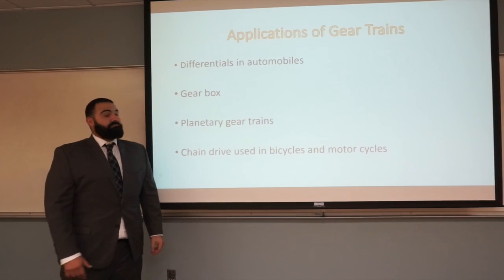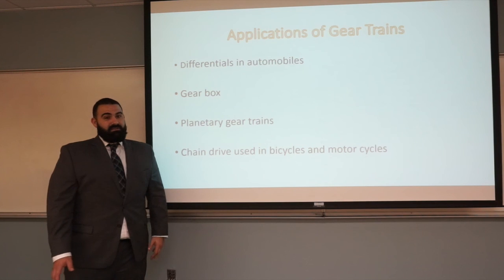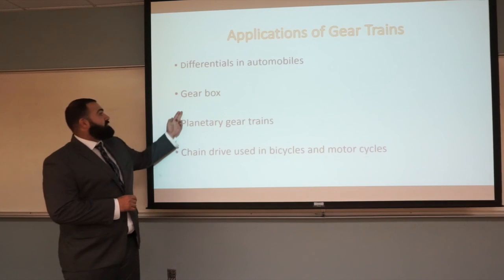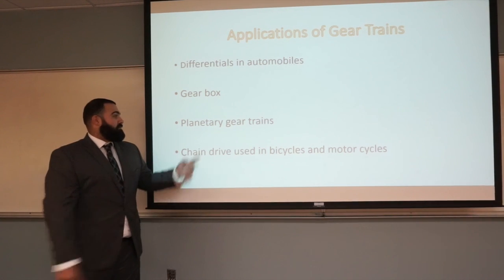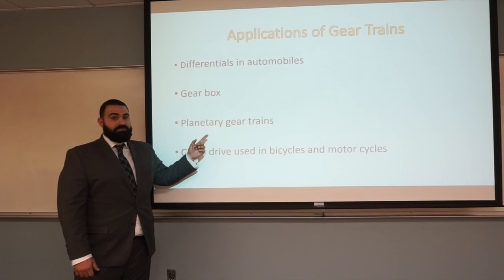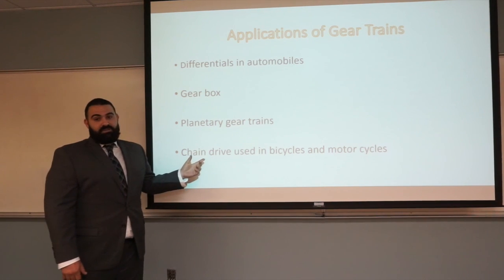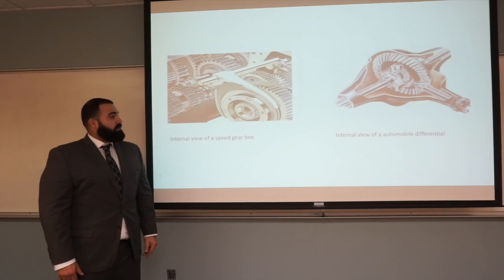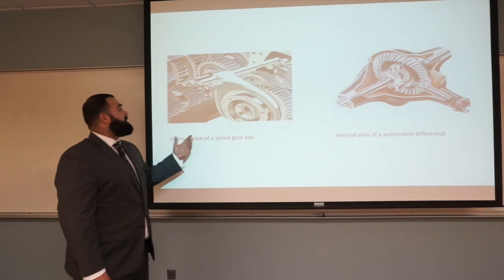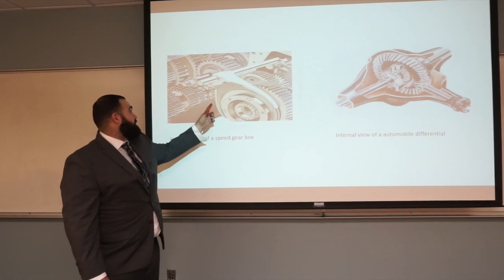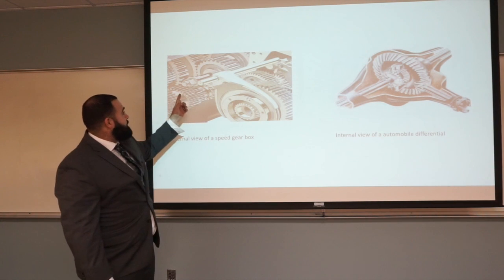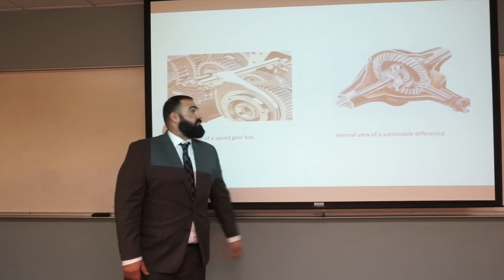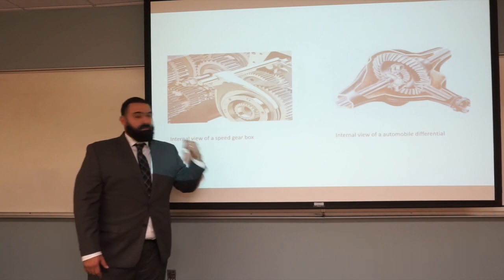Gear trains are used in a lot of things. Some examples include automobile gearboxes, differentials, and planetary gear trains used in automatic transmissions. Gear and chain drives are used on bicycles, motorcycles, and ATVs. Here you can see some examples — this is an internal view of an automobile gearbox with the shift fork and multiple stacks of gears for different speeds, and that is a view of the automobile differential that transmits power to the rear tires.